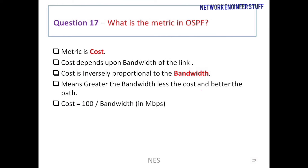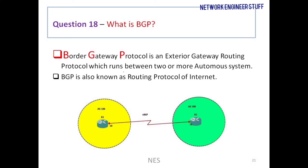Question number 17: what is the metric in OSPF? The metric in OSPF is cost. Cost is inversely proportional to bandwidth — if the bandwidth is higher, the cost will be less, and a lower-cost path will be preferred. Many people mistakenly answer that the metric of OSPF is bandwidth, but it is cost, and cost depends upon bandwidth.